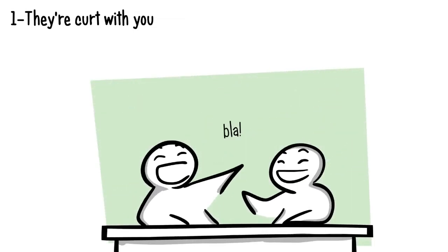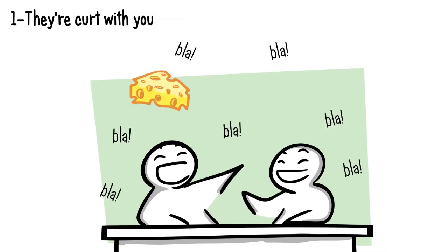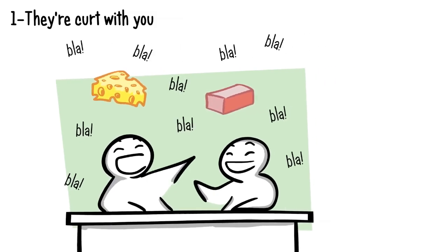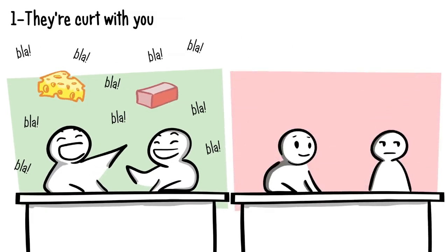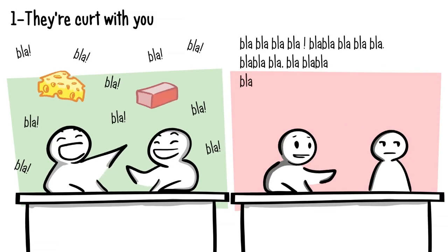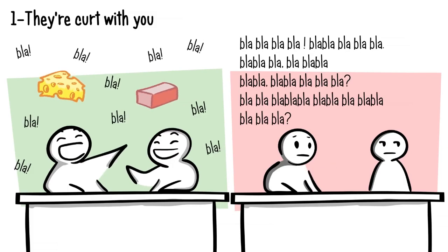Number one: they're curt with you. Do you ever feel like you can talk to your best friend 24/7? Even if the two of you aren't having a deep philosophical conversation, talking about something as silly as cheese or bricks seems entertaining, right? But when someone dislikes you, it's the complete opposite. They cut the conversation short. If you ask them how their day is going, they'll give you one-worded answers like fine or okay. It becomes clear they don't want to talk to you.